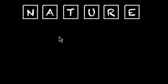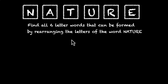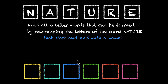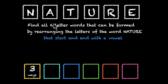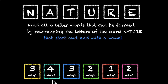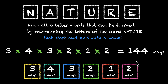Here's the word nature, N-A-T-U-R-E. Find all six-letter words that can be formed by rearranging the letters of the word nature, with the condition that these words should start and end with a vowel. They have to start and end with a vowel, so the first box and the last box have constraints — we'll deal with them first. How many vowels do we have? We have A, U, and E — three vowels — so we can fill the yellow box in three ways. One vowel is gone, so we're left with two, meaning the pink box can be done in two ways. For the remaining four boxes, two letters are gone and four letters are left, so they can be filled in four, three, two, and one ways respectively. So three times four times three times two times one times two — that's 144 ways.